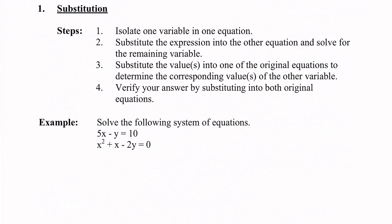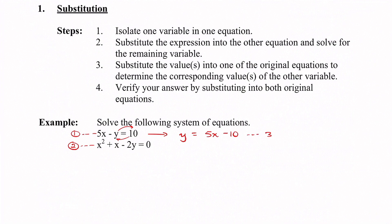Step 1: we need to isolate one variable in one equation. This quadratic equation is much more difficult, so we want to take the linear equation and isolate from that one. I'll label these equation 1 and equation 2. We're going to take equation 1 and make a new equation. Moving y to one side and 10 to the other gives us y equals 5x minus 10. We'll call this equation 3.